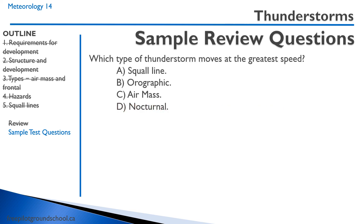Question: Which type of thunderstorm moves at the greatest speed? The answer is A) squall line — thunderstorms ahead of a fast-moving cold front.